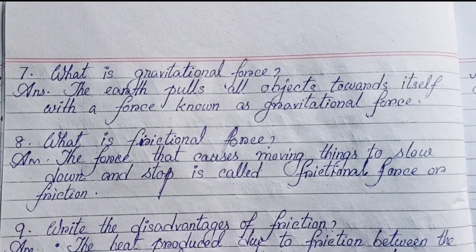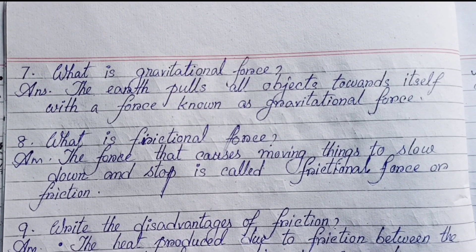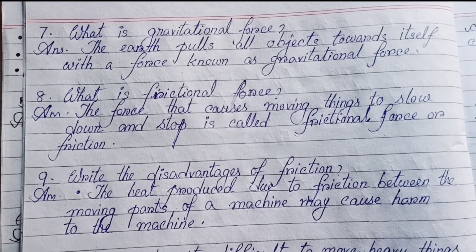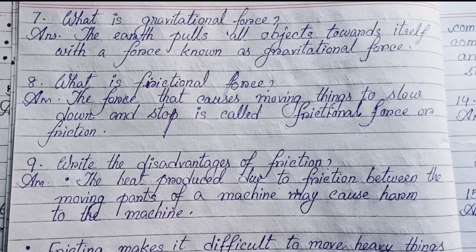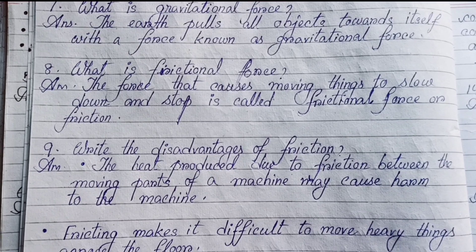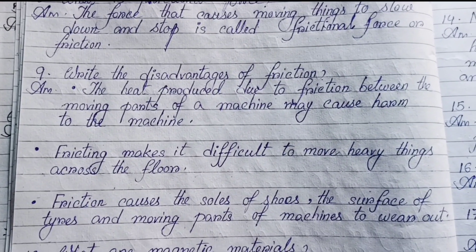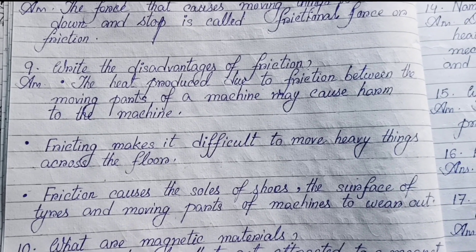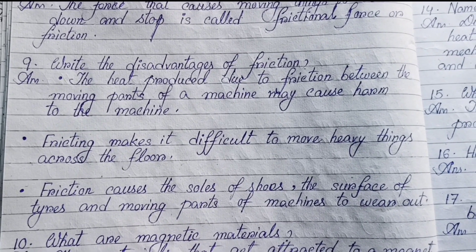Number seven: What is gravitational force? The Earth pulls all objects towards itself with a force known as gravitational force. Number eight: What is frictional force? The force that causes moving things to slow down and stop is called frictional force or friction.